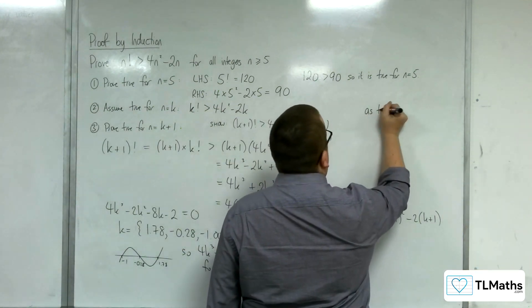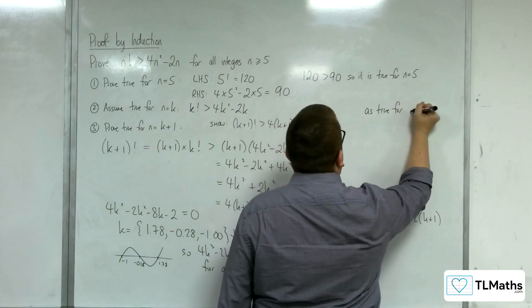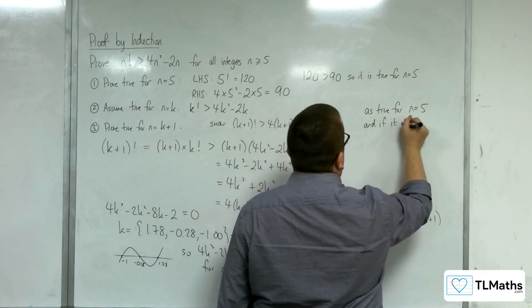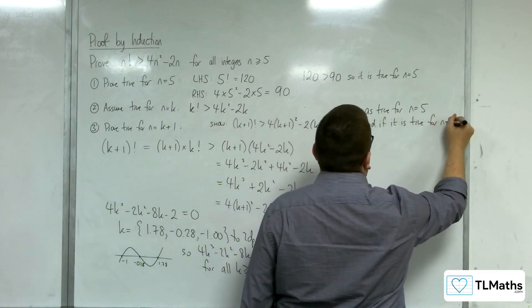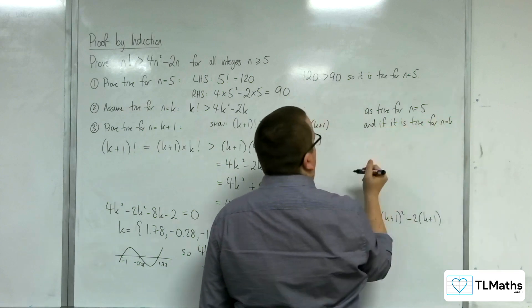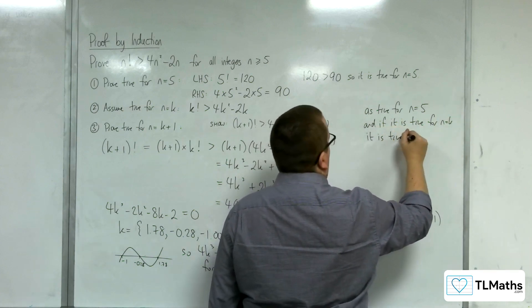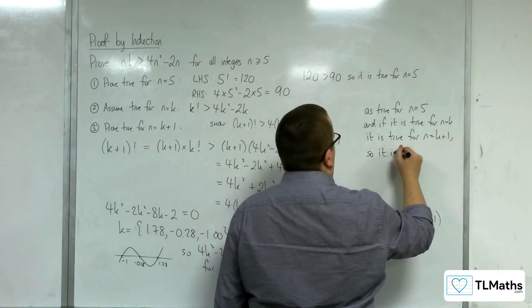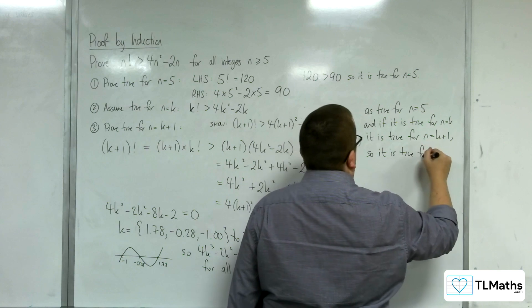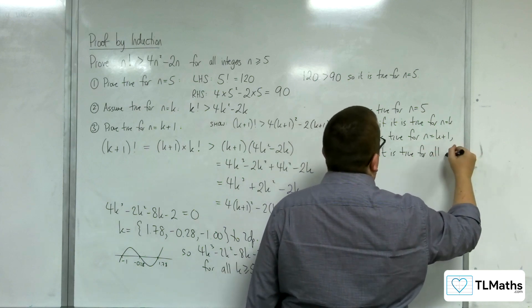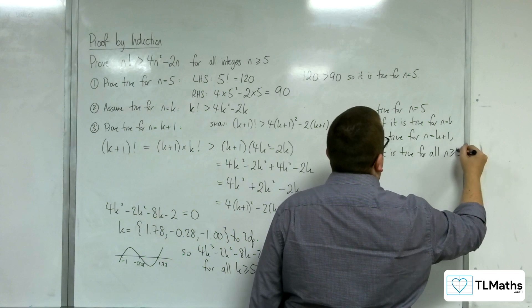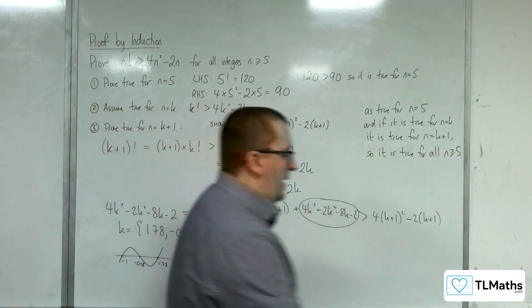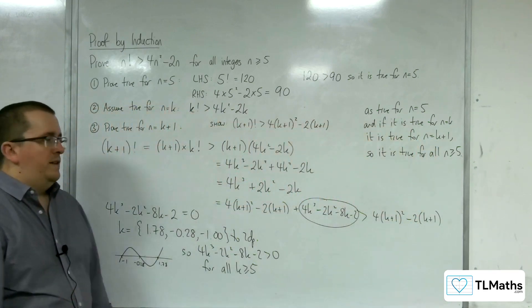So as it is true for n equals 5, and if it is true for n equals k, we have shown it to be true for n equals k plus 1. So it must be true for all n greater than or equal to 5. OK, and so that completes this proof by induction.